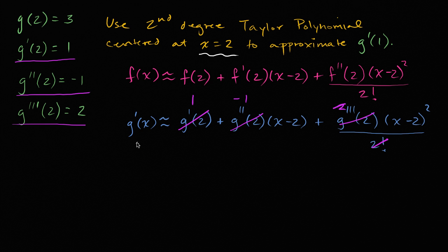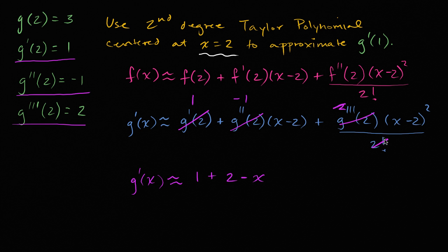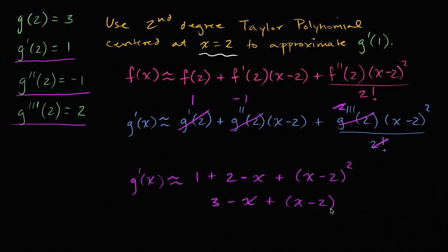So what are we left with for our second degree approximation of g prime of x centered at x equals two? We get g prime of x is approximately equal to one minus x minus two, which I can write as plus two minus x, plus x minus two squared. Simplifying further, this is three minus x plus x minus two squared.